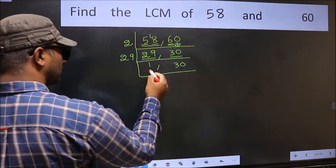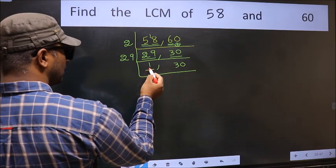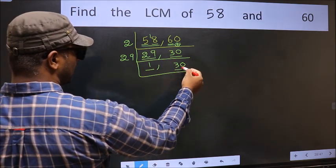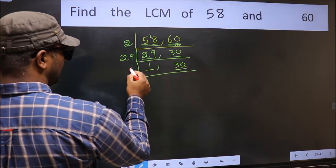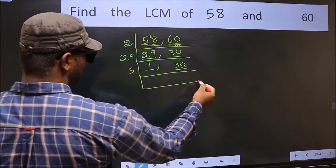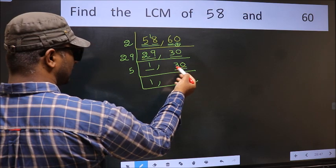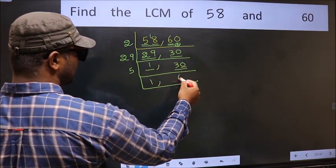Now we got 1 here. So focus on the other number 30. Last digit 0, so directly take 5. When do we get 30 in 5 table? 5 times 6 is 30.